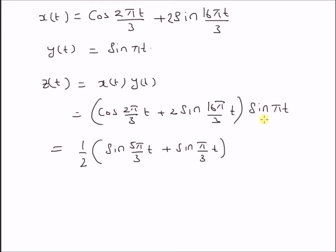This is basically 2 sin a cos b where a is equal to πt and b is equal to 2π/3·t. So by using that formula, we have the first component.